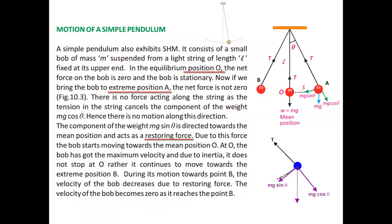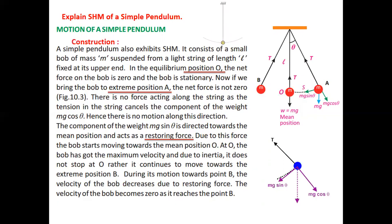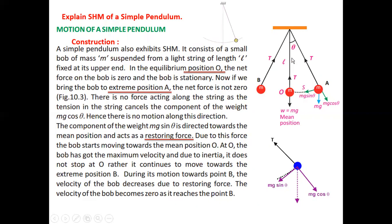Next we have the motion of a simple pendulum. Question: explain simple harmonic motion of a simple pendulum. First we will discuss the construction. A simple pendulum also exhibits simple harmonic motion. It consists of a small bob of mass M suspended from a light string of length L fixed at its upper end. A string is attached to a support, its length is L, and this is a light string.